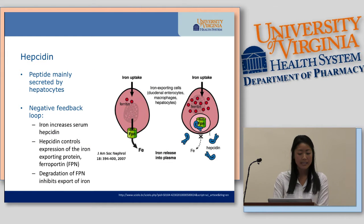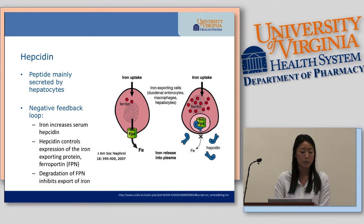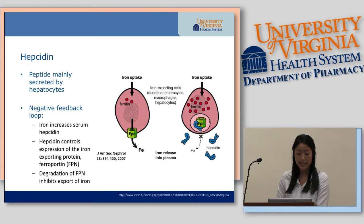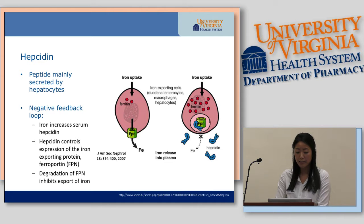Hepcidin is one of the more recently discovered biomarkers. It's a peptide mainly secreted by hepatocytes and is involved in iron homeostasis. The main role of hepcidin is to control the surface expression of ferroportin (FPN), an iron-exporting protein. When hepcidin binds to ferroportin, it causes internalization of this complex, which is then degraded inside the cell. After ferroportin is degraded, macrophages and hepatocytes can no longer export iron.